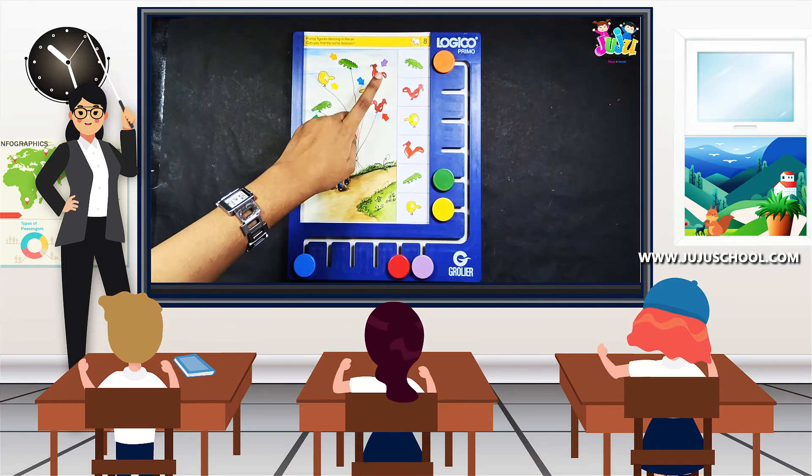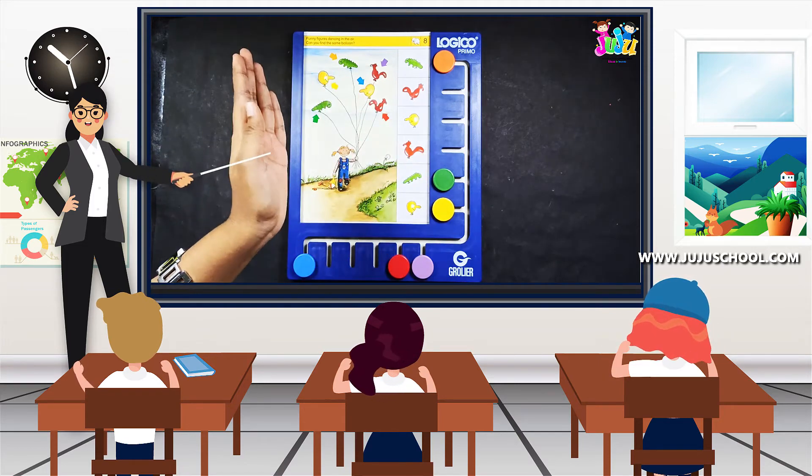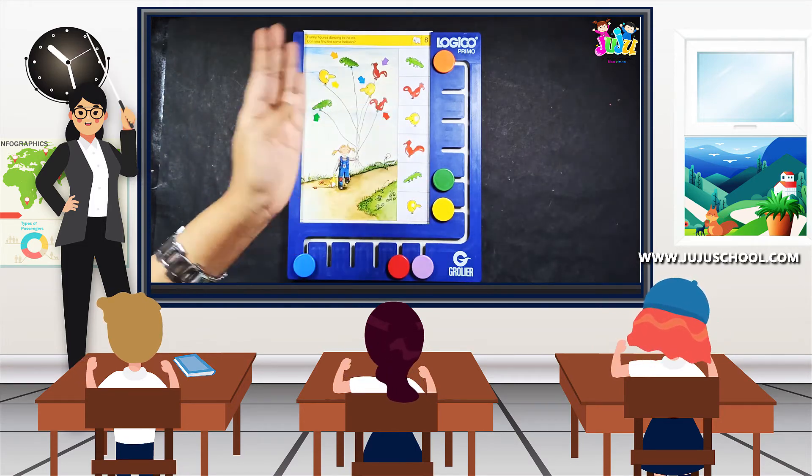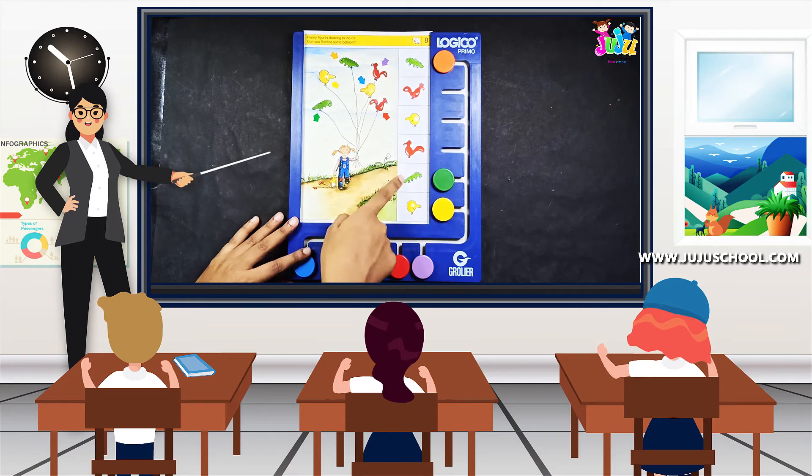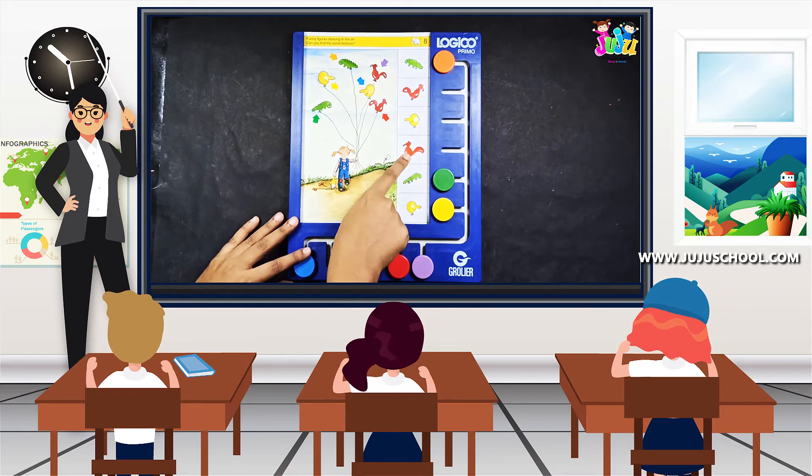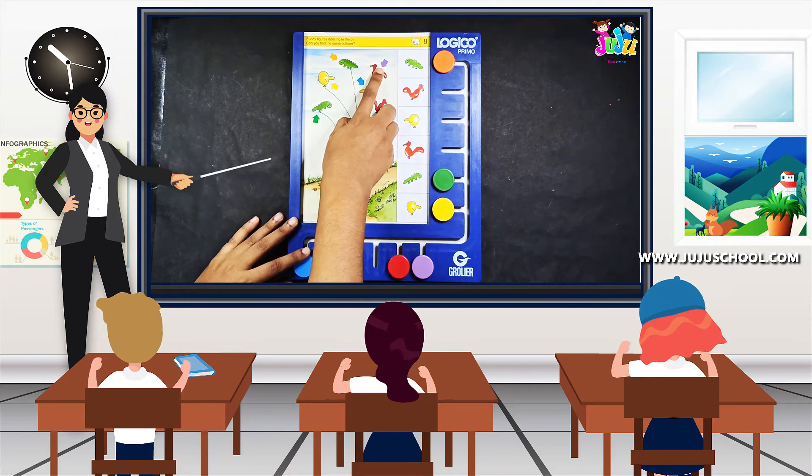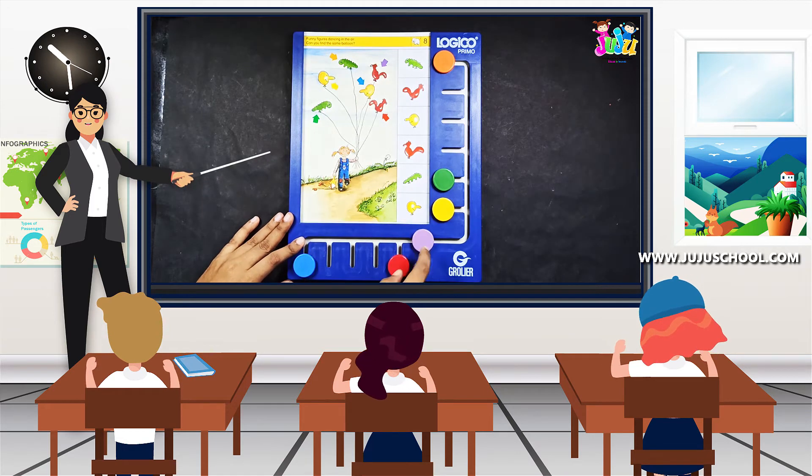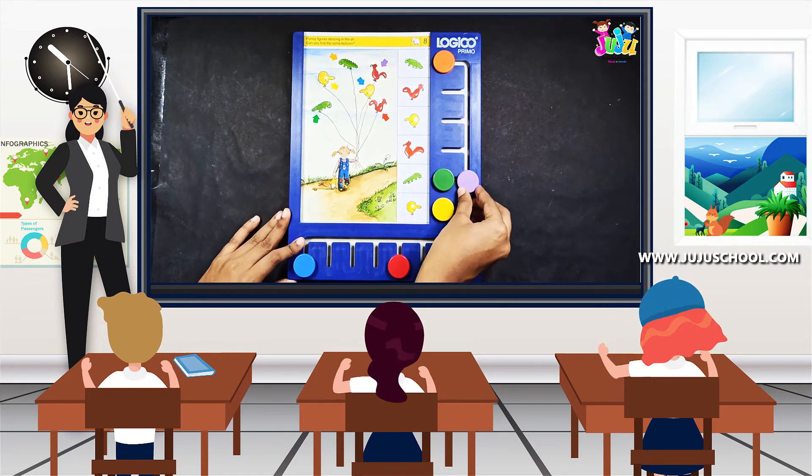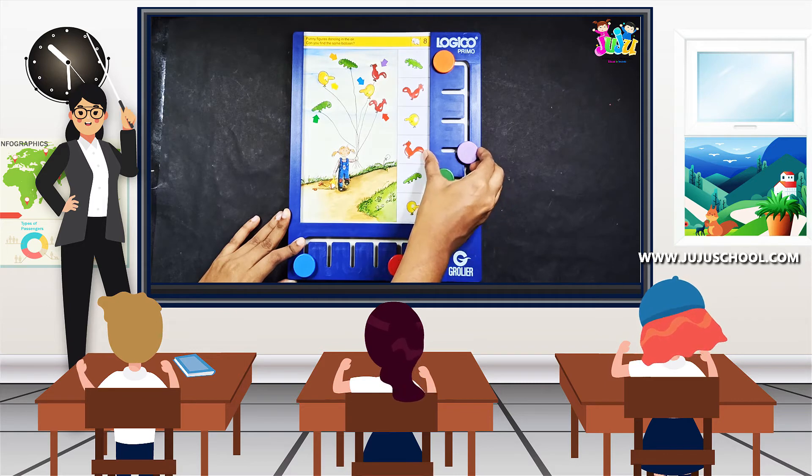Next, the hen. The hen is turning toward the left side. Can you find where it is? Yes, it's over here. It has a purple mark. We have to move the purple button and fix it here.